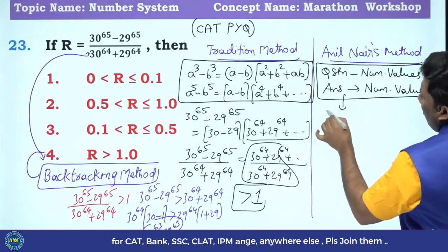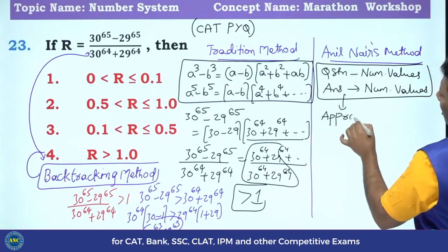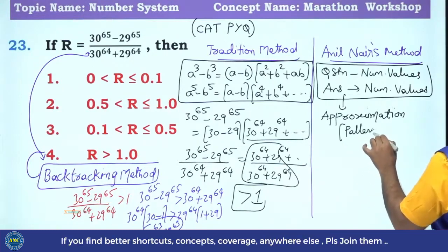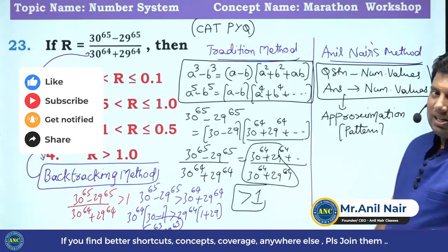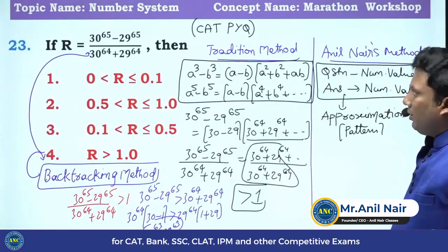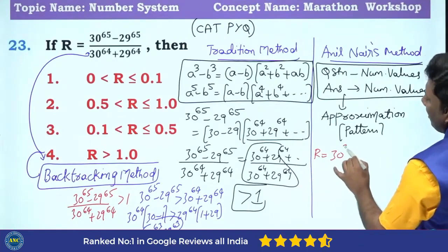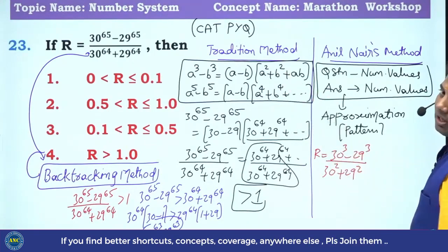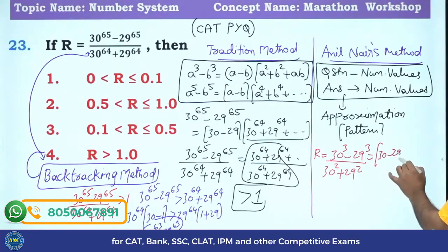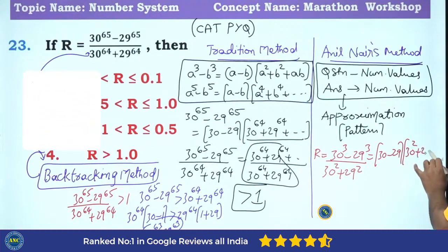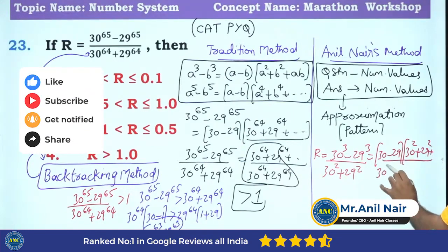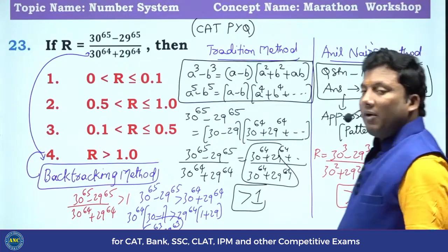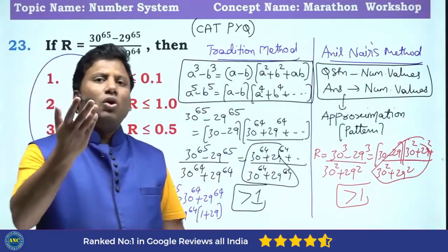What is the technique? Approximation or pattern recognition. Identify the patterns for the lowest powers. If the patterns behave the same, you can get the answer directly. Let me take a smaller value: 30 cube minus 29 cube divided by 30 square plus 29 square. Using A cube minus B cube equals A minus B into A square plus B square plus AB, divided by 30 square plus 29 square — the answer is greater than 1. So for power 3, I get greater than 1; power 4 also greater than 1, and so on.